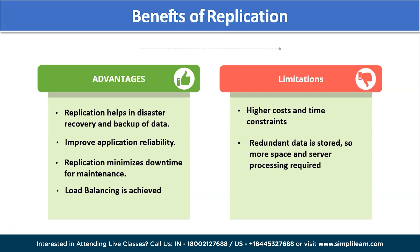Load balancing can also be achieved using replication. MongoDB works on a lot of unstructured data that keeps piling up. If many users are working on the same server, it can cause breakage or failure. To achieve load balance and handle the large number of users on the same database, you can replicate the data to different servers, which ultimately achieves load balancing.